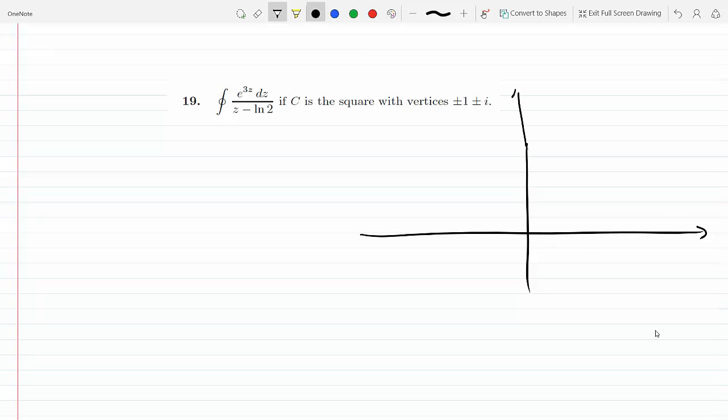This is the real axis, this is the imaginary axis. So we've got +1, -1, we've got i and -i. Let's see what we make here. We make a square: -1, 1, i, -i.